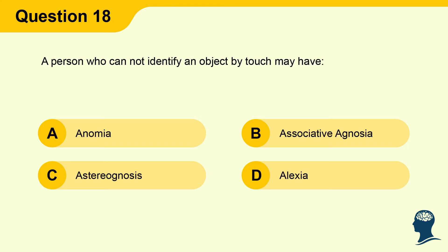Question 18: A person who cannot identify an object by touch may have: A) Anomia, B) Associative agnosia, C) Astereognosis, D) Alexia.